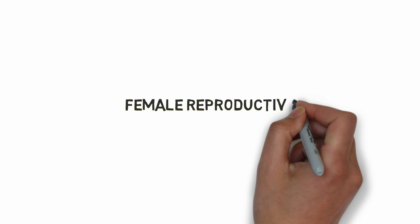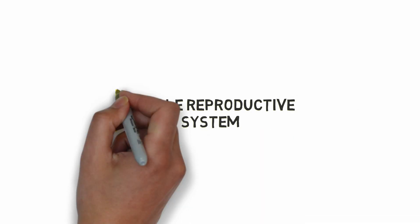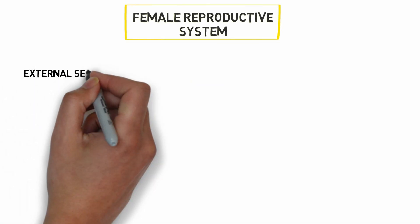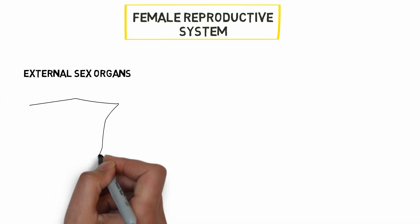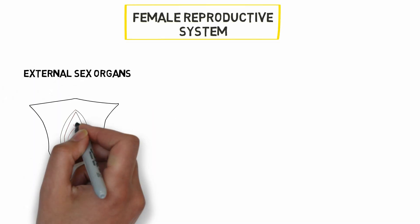In this video we will study about the female reproductive system. The female reproductive system can be divided into two parts: the external sex organs and the internal sex organs.